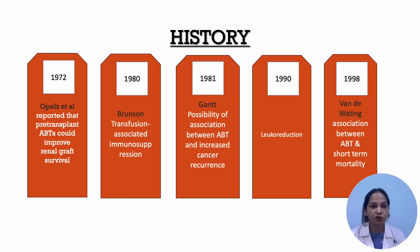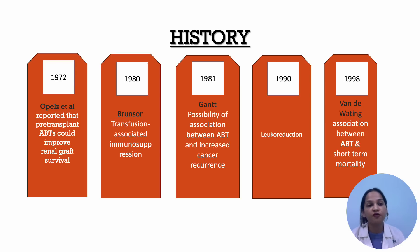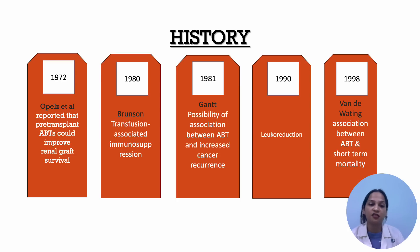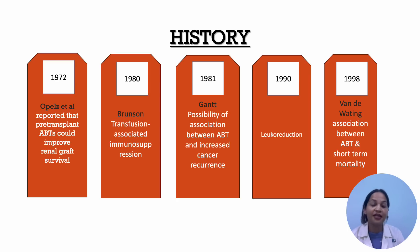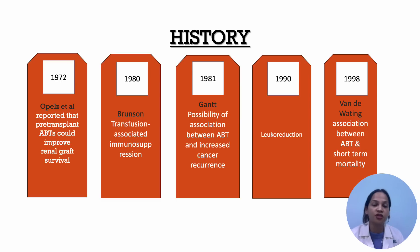Coming to the history related to TRIM. In 1972, TRIM was first reported by Opels et al., who reported that pre-transplant allogeneic blood transfusion can improve renal graft survival. Then in 1980, Branson et al. established that there is transfusion-associated immune suppression. In 1981, Jand et al. reported the possibility of an association between allogeneic blood transfusion and increased cancer recurrence. Later in 1980, leukoreduction started to reduce the effect of TRIM. And in 1998, Van de Watering reported the association between allogeneic blood transfusion and short-term mortality.